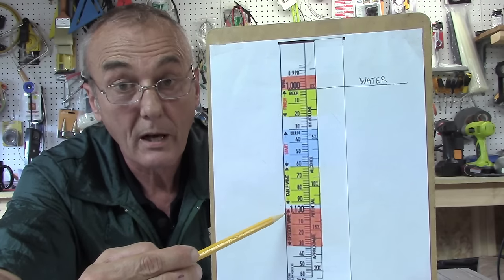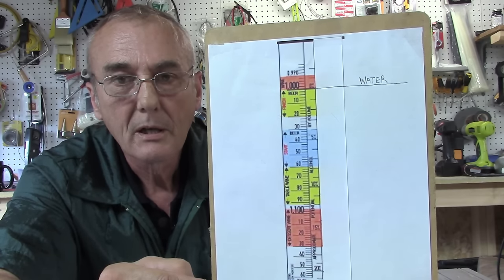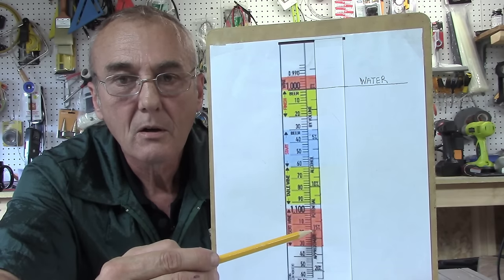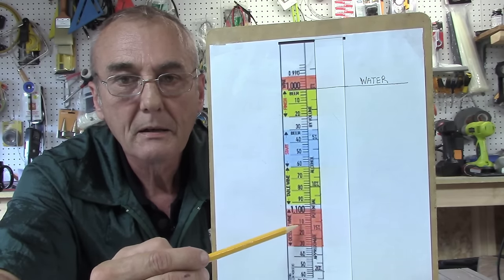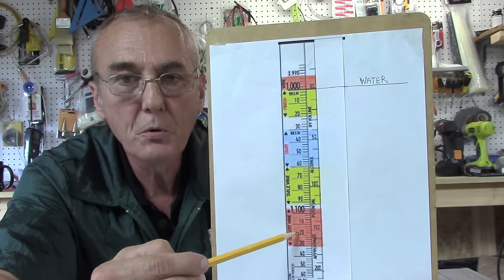Now what would happen if I wanted to go to 15 percent, which is down here? Well, I'd have to go from 90 all the way down to 1.200. That's how you read that scale.